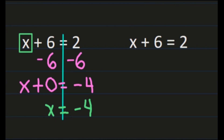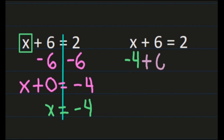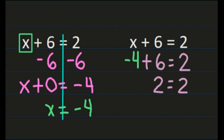We can check these. Substitute what we got for x — negative 4 — back into the equation: negative 4 plus 6 equals 2. We need to make sure that is a true statement. Applying integer rules to negative 4 plus 6: subtract 6 minus 4, which is 2, and keep the sign of the larger absolute value, the positive 6. We get 2 equals 2, confirming that x equals negative 4 is correct.